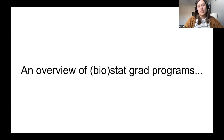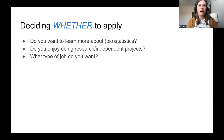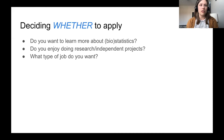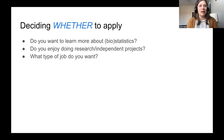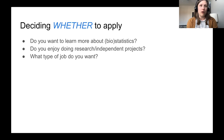Before I talk about application details, I want to give a brief overview of the types of programs that are out there and things to think about as you're deciding where to apply and whether to apply to graduate school at all. The three main questions are: Are you interested in learning more about biostatistics, statistics, or data science? Do you enjoy doing research or independent projects? And what type of job do you want at the end?